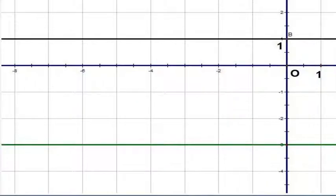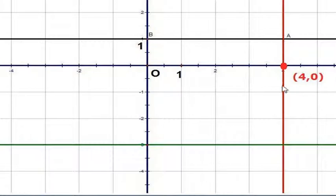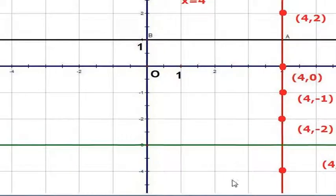We shall see a way of describing the equation of such a line. Notice that if you look at a point here, it passes through (4,0), and we can look at more points on this.